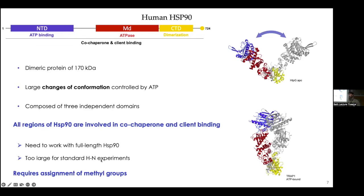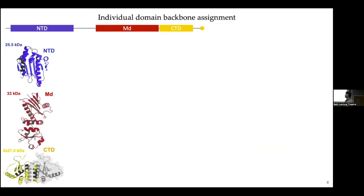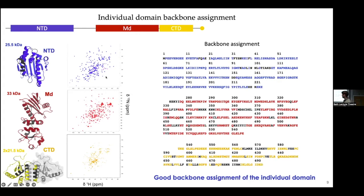The first part of my postdoc was to assign the methyl resonances of HSP90. HSP90 has three domains and two of these can be expressed independently - they are still quite large but much better than the full-length protein. We can measure them and they give very nice spectra on the proton-nitrogen dimensions, allowing backbone assignment. With those three constructs we got about 80 to 90 percent assignment of the full-length protein in the isolated domains, and we used this backbone assignment as a base for assigning the methyls.